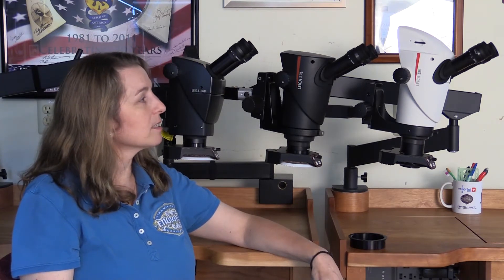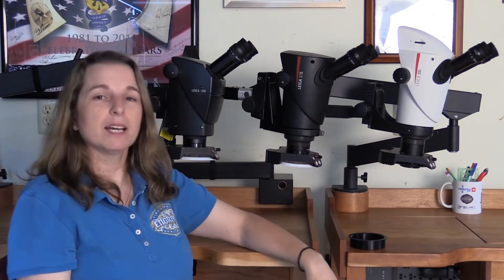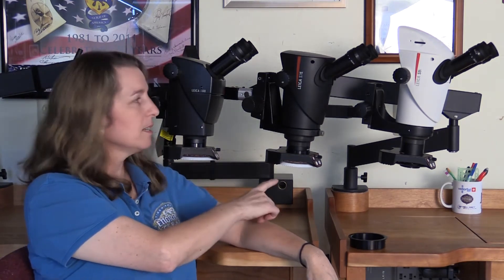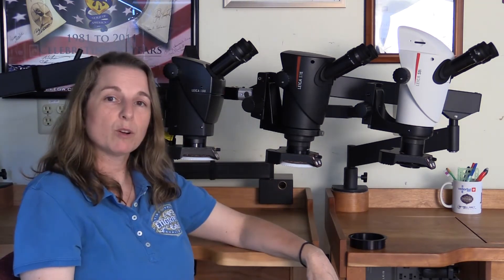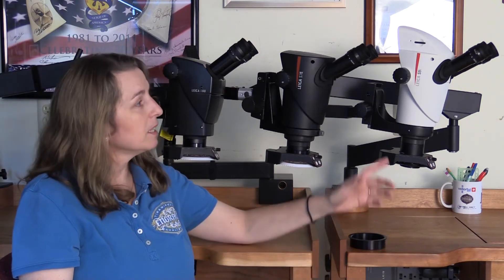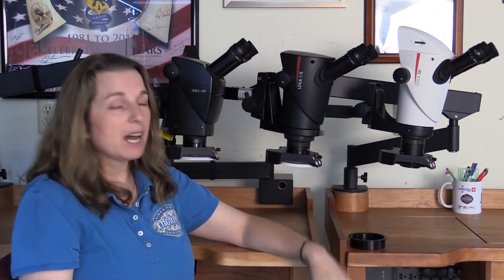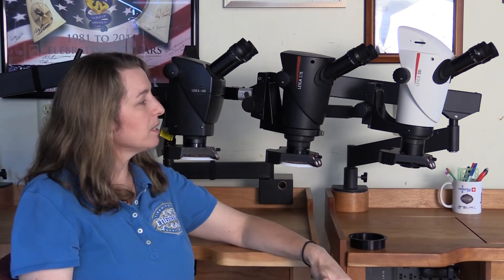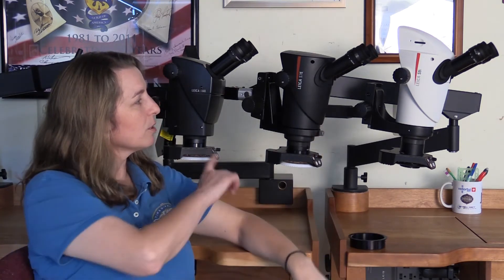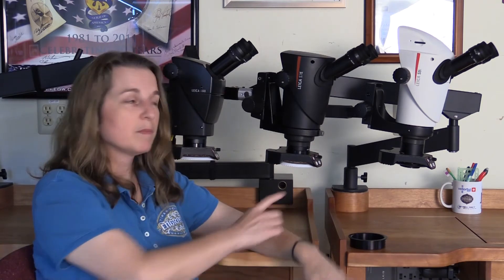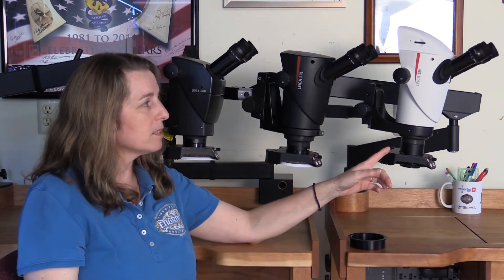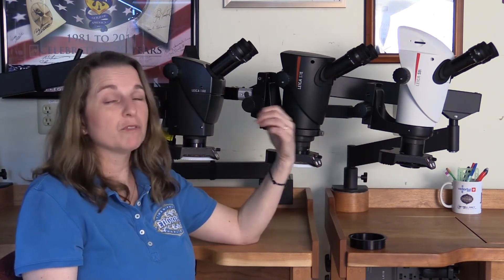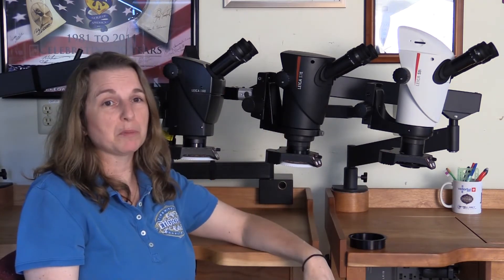As far as the lenses go and the glass inside the bodies, these two black ones, the A60 and the S7, have achromatic glass. The S9 has apochromatic, so there is a bit of difference in the internal glass of the scopes. This one has distortion and color correction, that's the absolute best. These are very clear though and beautiful scopes.